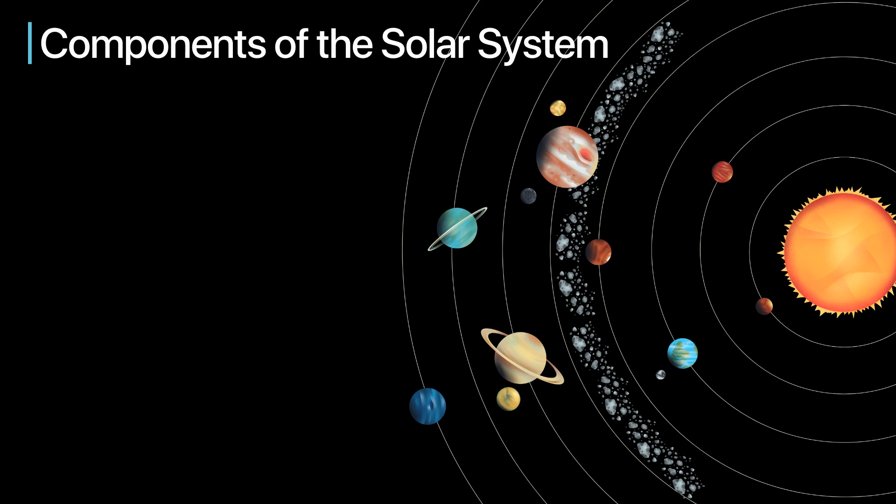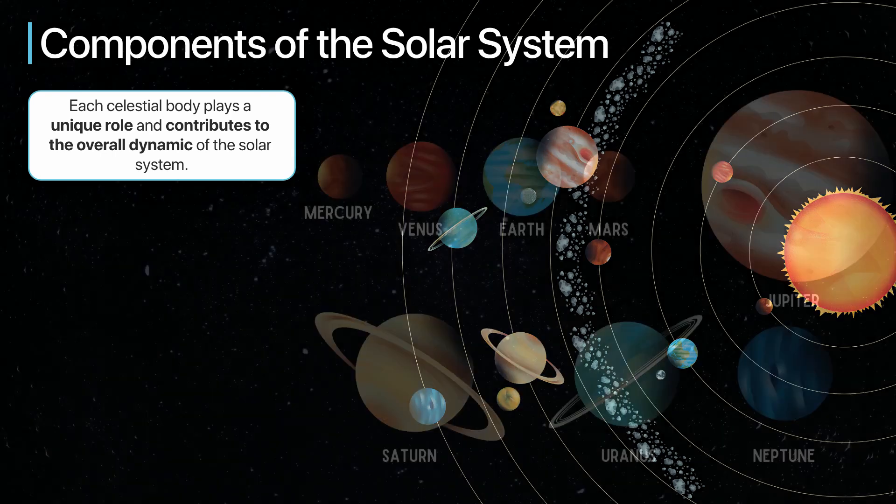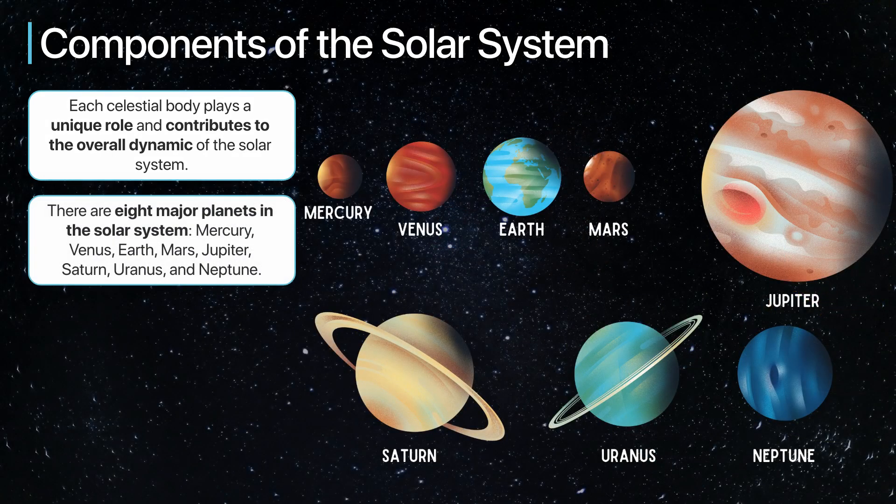Our solar system is made up of numerous components. Each of these celestial bodies plays a unique role and contributes to the overall dynamic of the solar system. The main component is planets. There are eight major planets in the solar system.